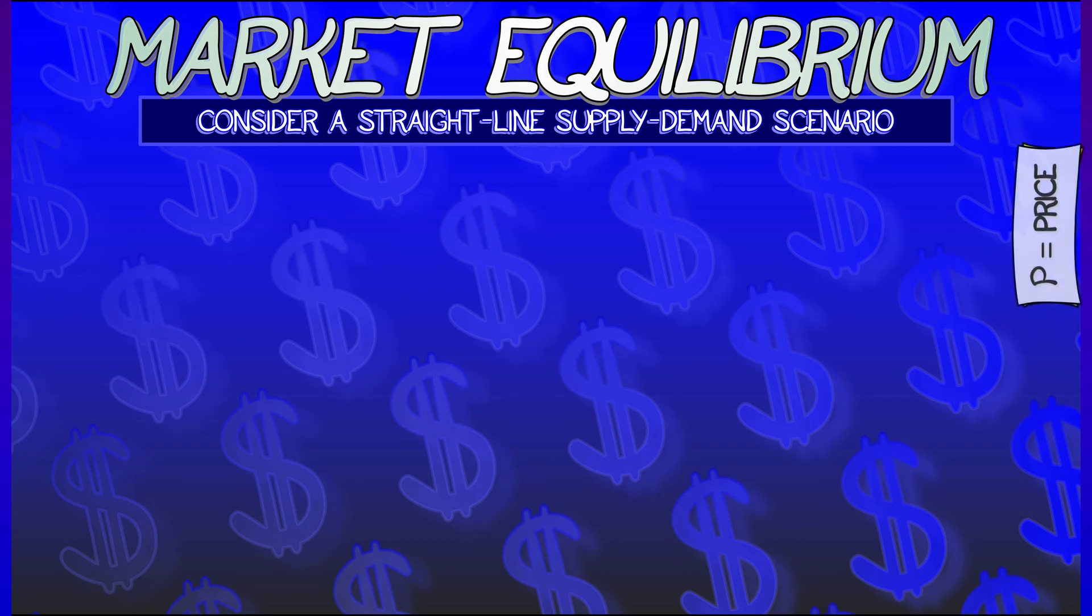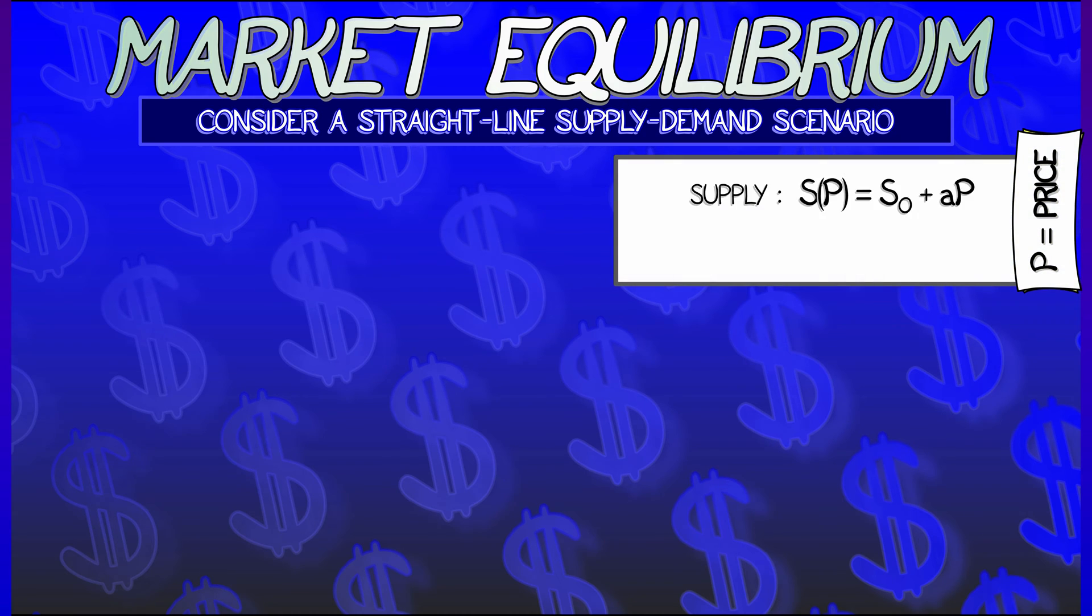Let's say that we use p to denote the price of a certain object, an object that is supplied according to some supply curve, in this case a straight line, s-naught plus ap.